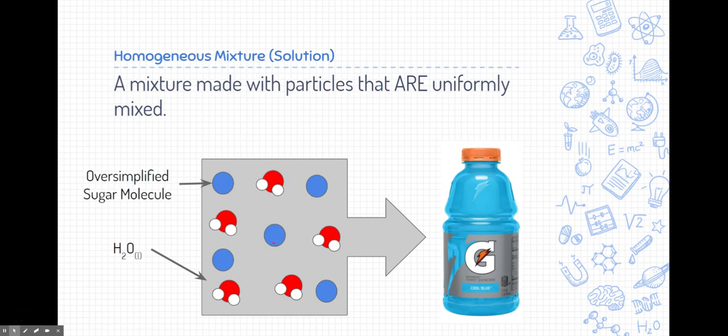Now, this is a very oversimplified model of sugar, but we're just trying to show you that this is a homogeneous mixture, because the particles are uniformly mixed. Notice that the water particles take up the entire container, and they're uniform throughout. And the sugar molecules, as well as all the other substances, are also uniformly mixed throughout. There's also salts in there, as well as other things that are all uniformly mixed throughout.